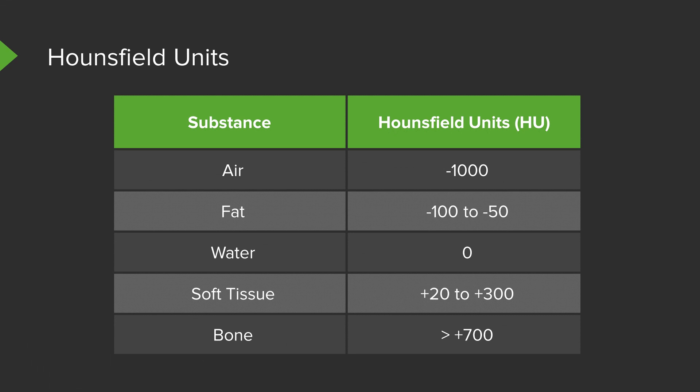If you include metal, which is not really an anatomical structure, metal will actually have the most Hounsfield units, close to about 1,000.